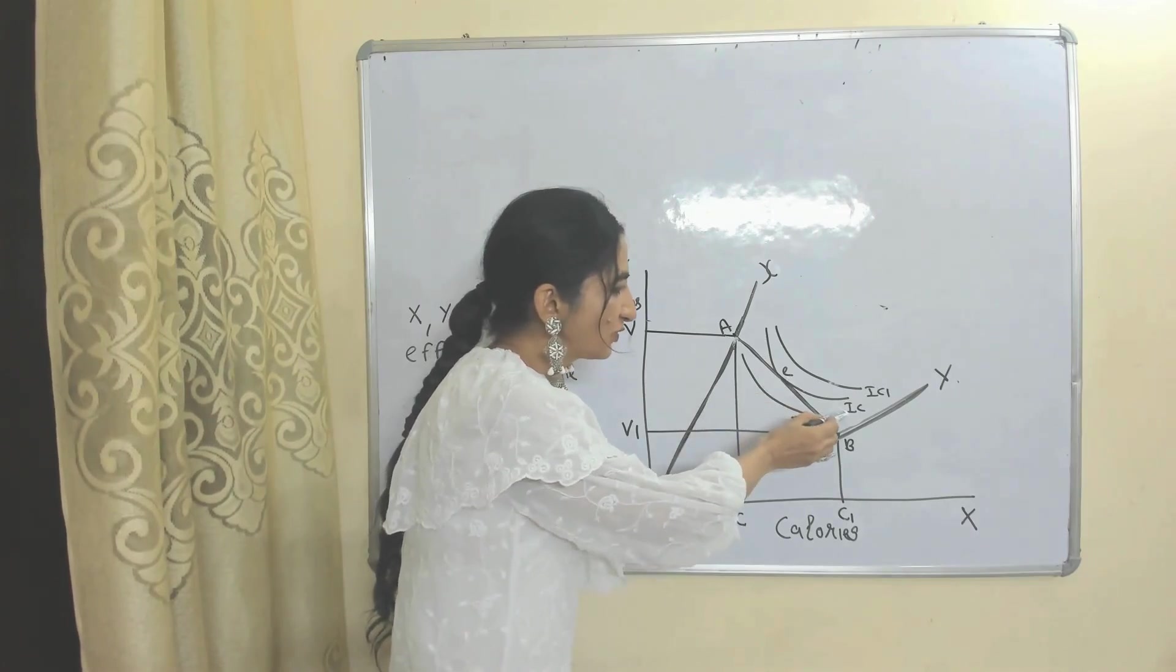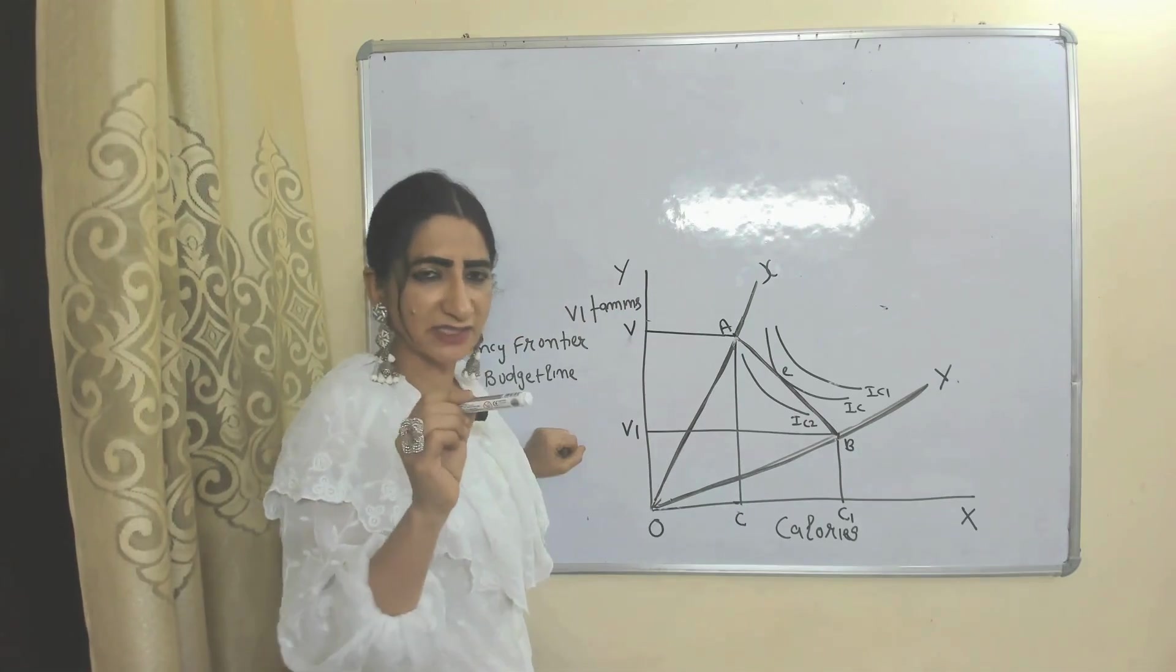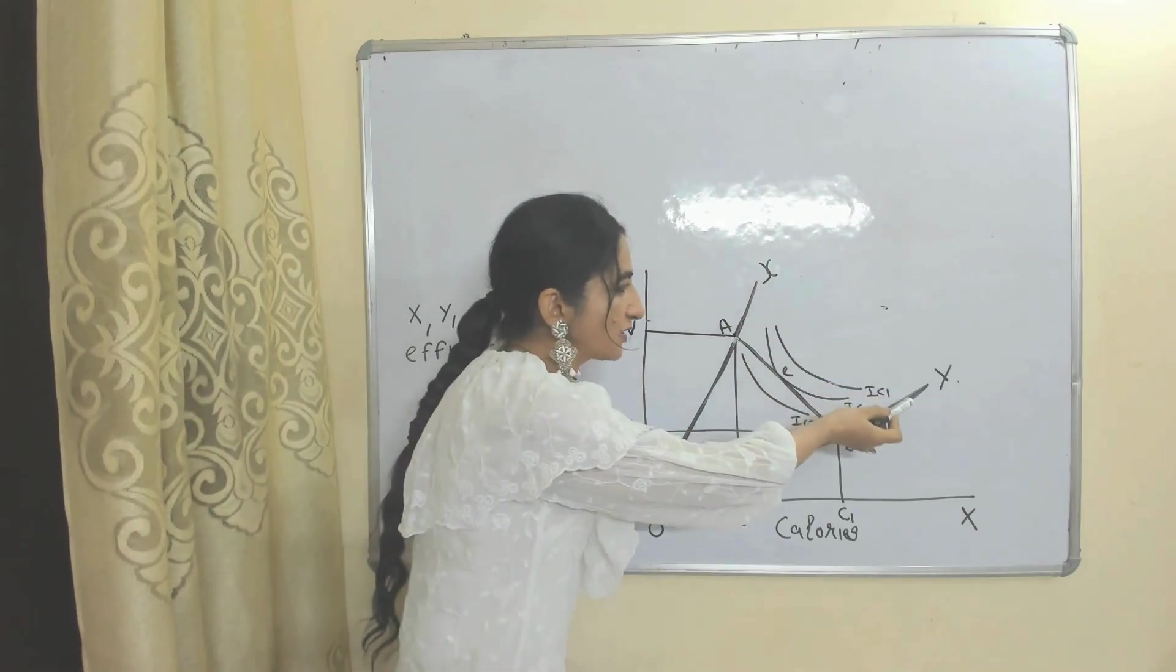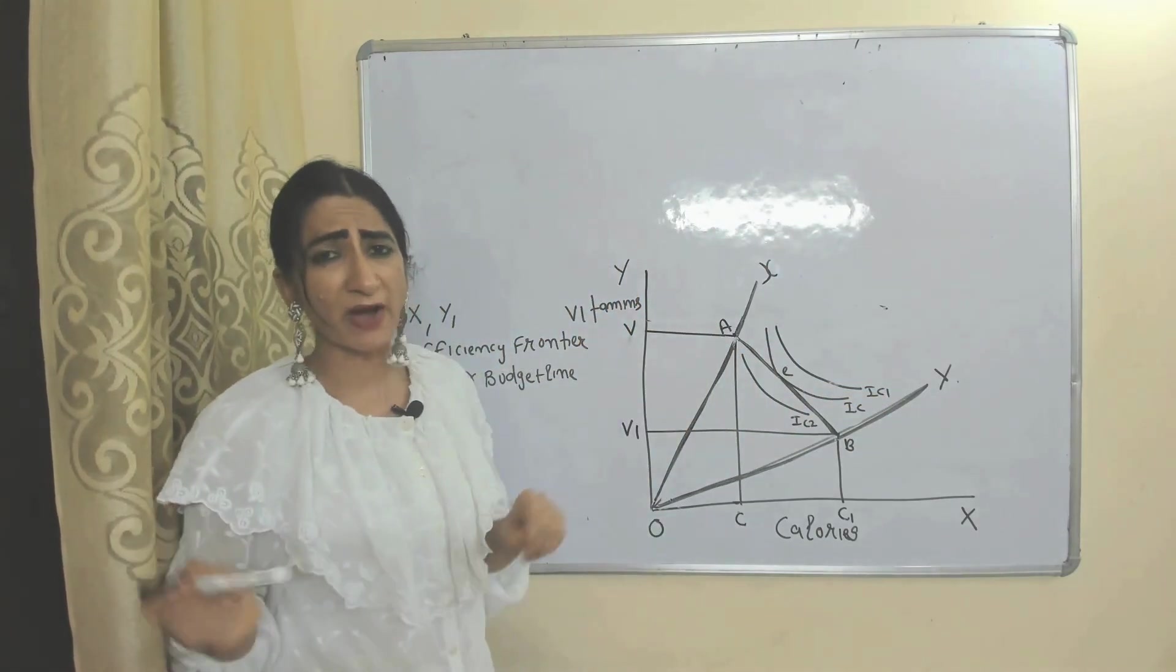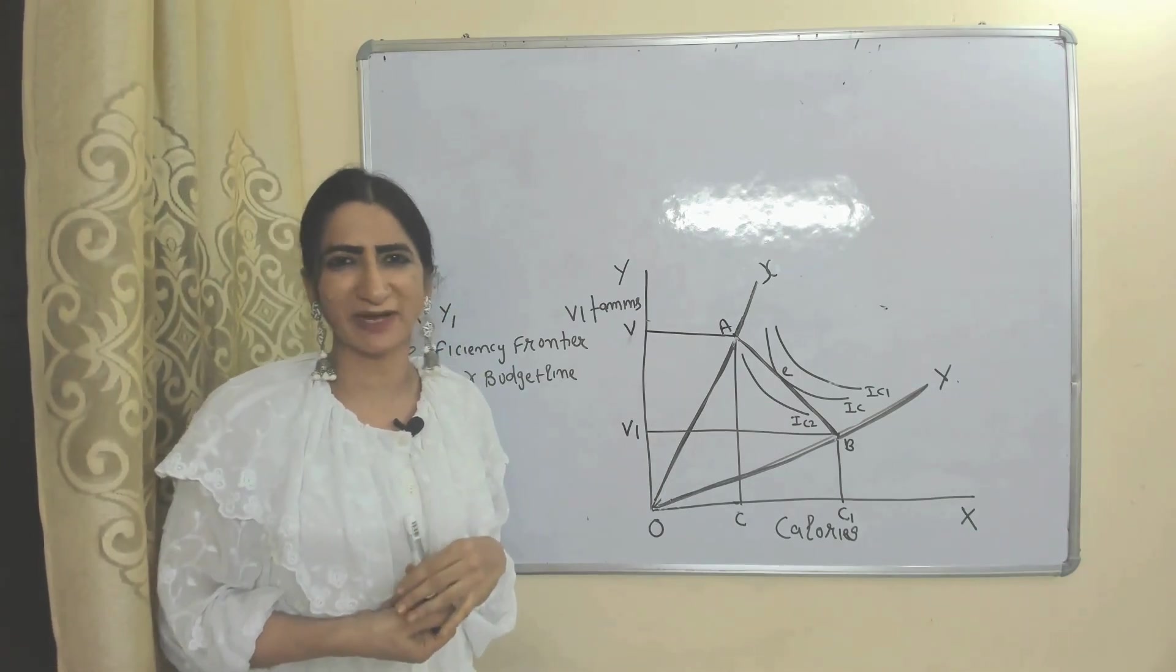At this E point, the consumer is receiving maximum utility by consuming both products X and Y. So this is all about today's video. I think you got it. Thank you so much for watching this video.